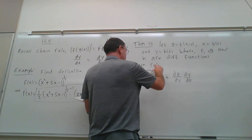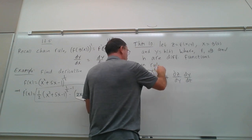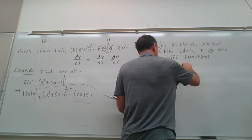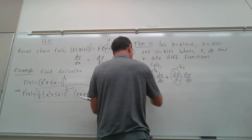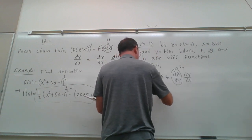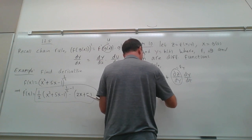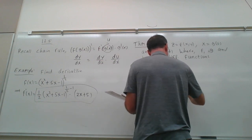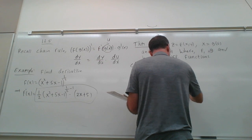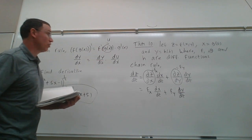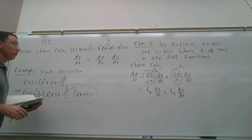Another way of writing this is: dz/dt equals f_x times dx/dt plus f_y times dy/dt, where f_x and f_y denote the partial derivatives with respect to x and y. That's the chain rule for two variables.